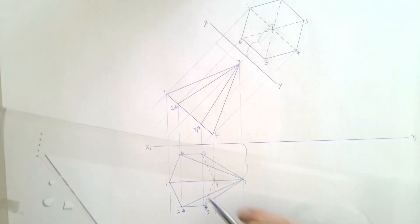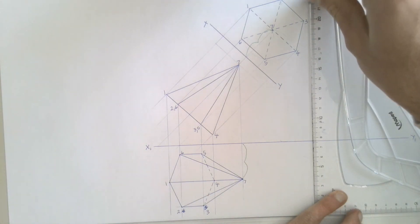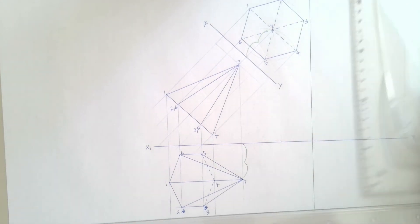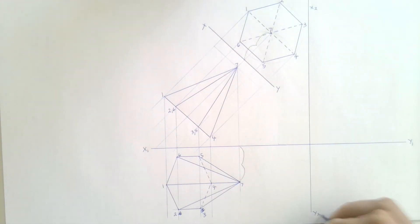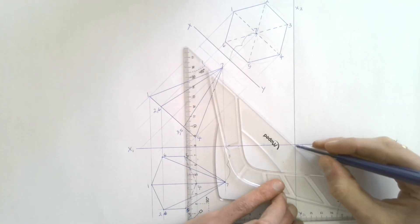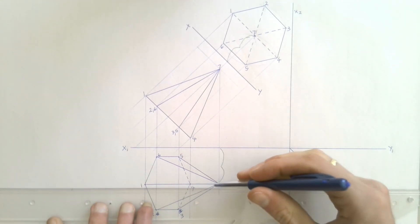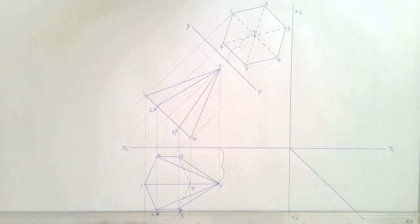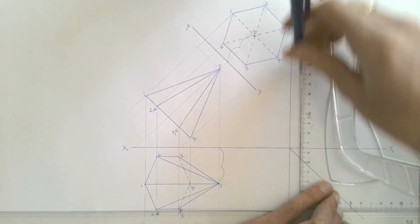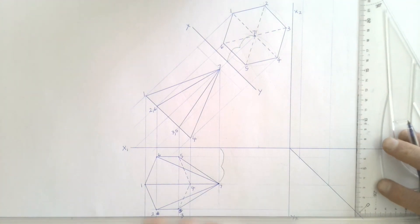Now we're quickly going to draw in the left view as well. For the left view, we go much further to the right so our XY line is out of the way of the auxiliary view. We call this long XY line X2 Y2. We project across, add in the 45 degree line down at the bottom to project off of, and project each of our points across onto the 45 degree line, then project those up into our left view from where they hit the 45 degree line.